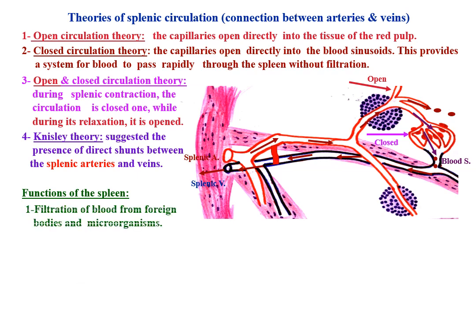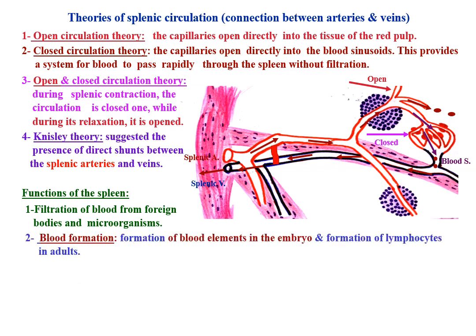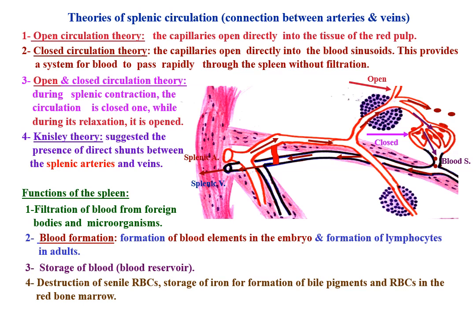Functions of the spleen: filtration of blood from foreign bodies and microorganisms; blood formation — formation of blood elements in the embryo and formation of lymphocytes in adults; storage of blood, as the spleen acts as a blood reservoir; destruction of senile erythrocytes and storage of iron for formation of bile pigments and erythrocytes in the red bone marrow; and humoral immunity — antibody formation by B lymphocytes, and cell-mediated immunity by T lymphocytes.